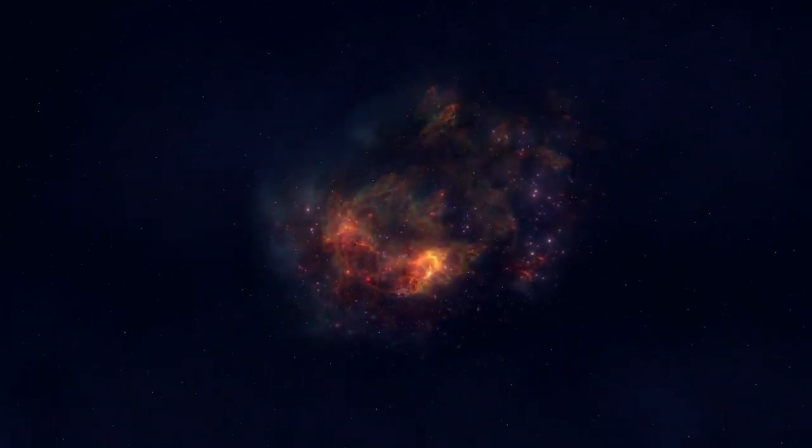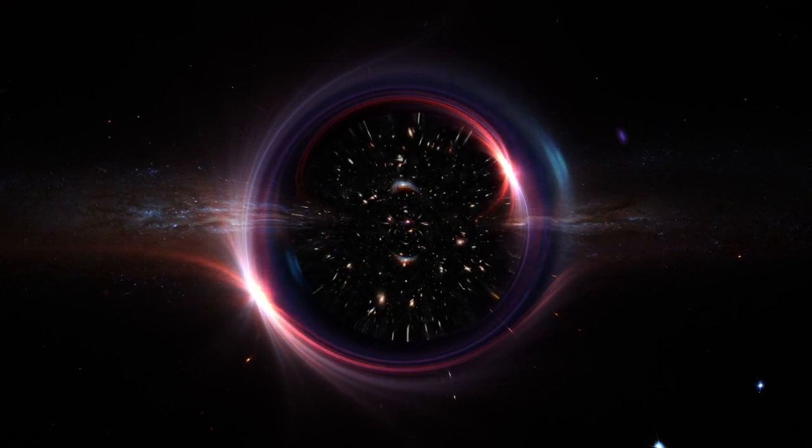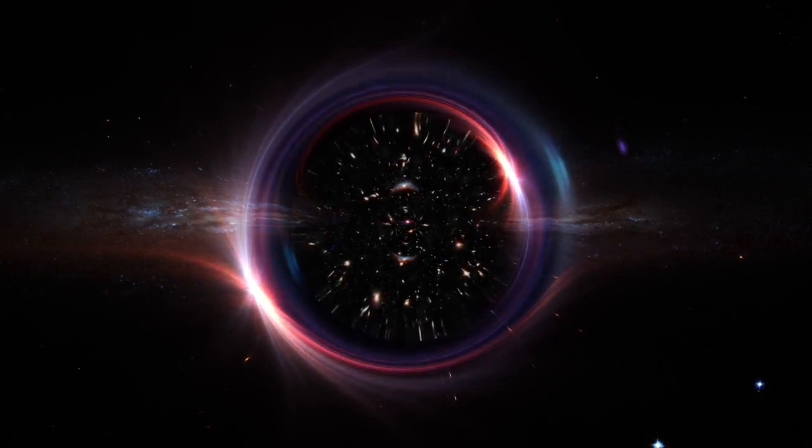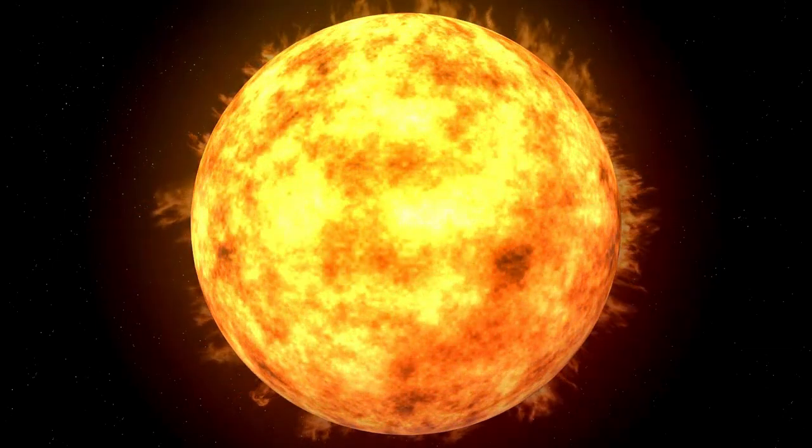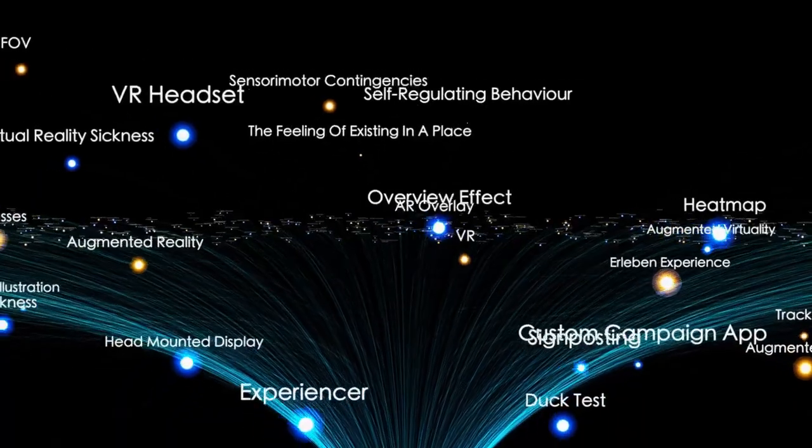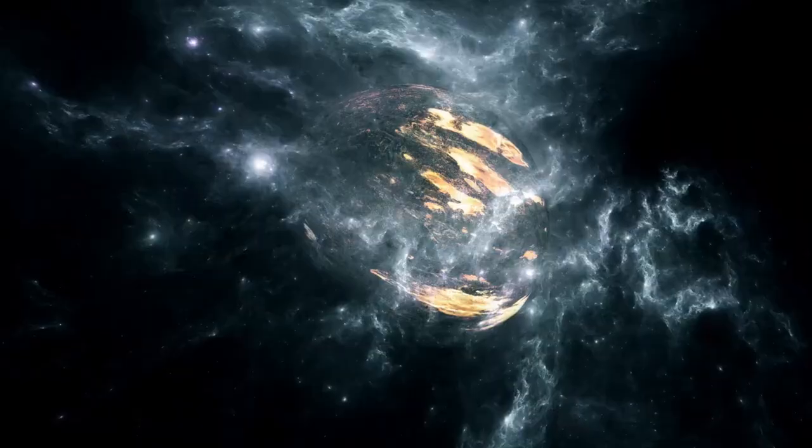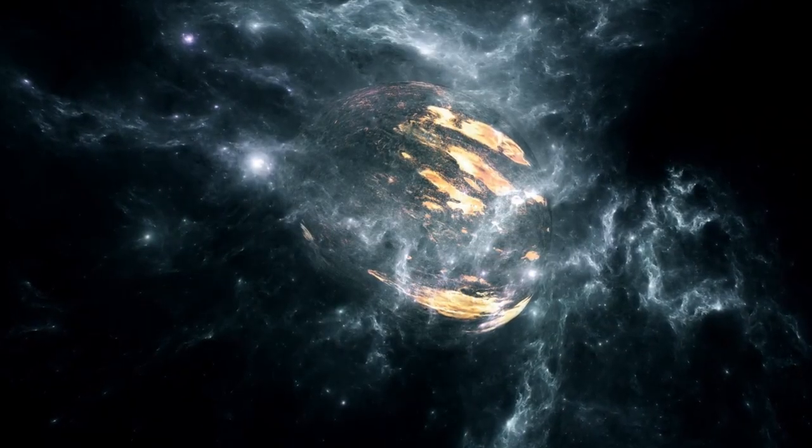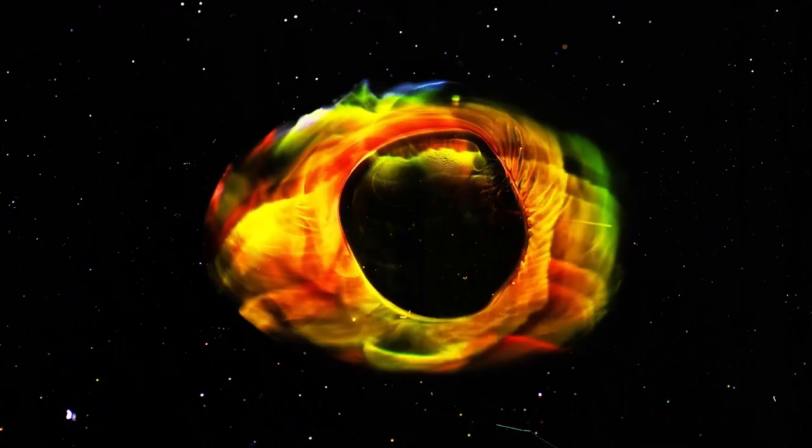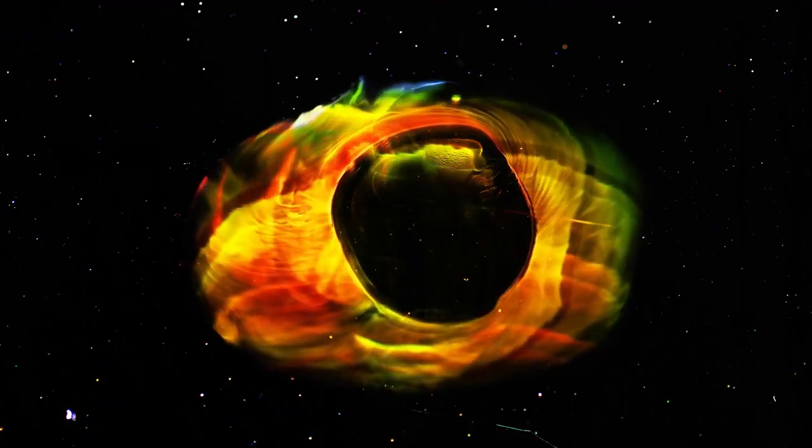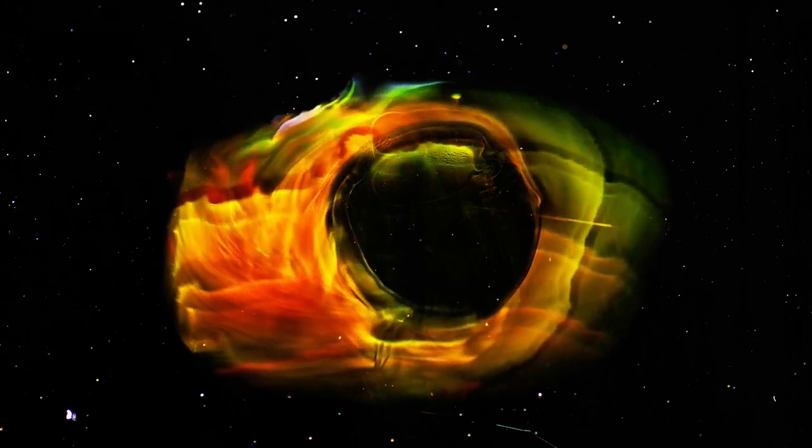So why is Betelgeuse such a significant star? Situated in the Orion constellation, which has featured in myths and astronomical lore for centuries, Betelgeuse is not only large and luminous, but also easy to observe with the naked eye. For scientists, it offers a unique opportunity to study the life cycle of massive stars. Unlike our Sun, which will fade gently over billions of years, red supergiants like Betelgeuse live fast and die young. It's well into its final stages of life.